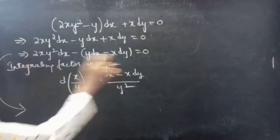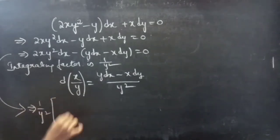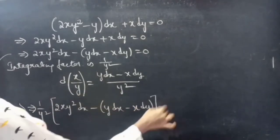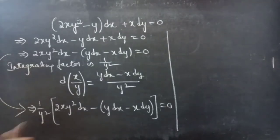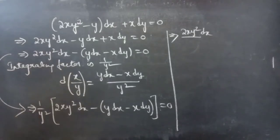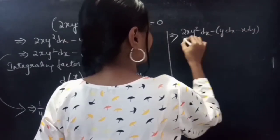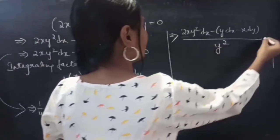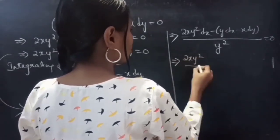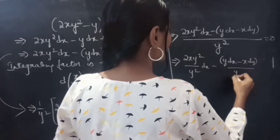We multiply the whole equation by the integrating factor 1/y²: (1/y²)(2xy² dx − (y dx − x dy)) = 0. This gives us 2xy²/y² dx − (y dx − x dy)/y² = 0, which simplifies by cancelling y² in the first term.